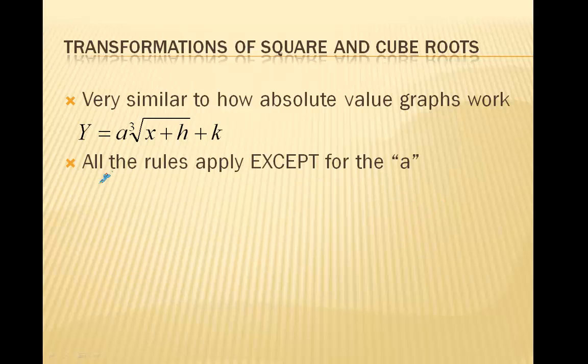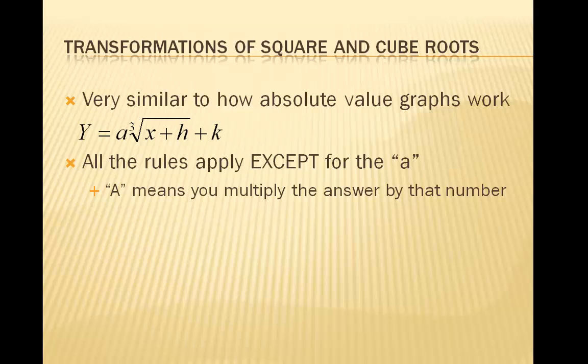So right here we got the horizontal shift for h, and then we got the vertical shift for k. And a, we will get to right now. So all rules apply just like absolute value, except for a. A is its own little thing that is for the cube and square roots, which a means that you multiply the answer by that number. So a better way to explain that is that x, you square root or cube root of x, so let's say it's 1 because that's easy, and let's say a is 2. Cube and square root of x is 1, so we multiply 1 by a, and a is 2, so you get 2, and then you get a coordinate.